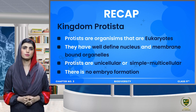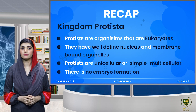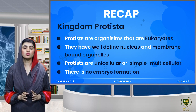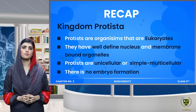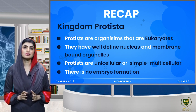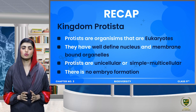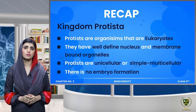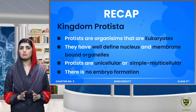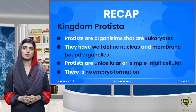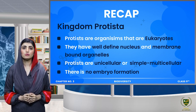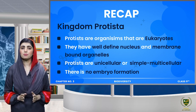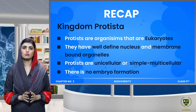Protists are eukaryotic — they are eukaryotes. Eukaryotes are organisms made of eukaryotic cells, meaning cells that have a well-defined nucleus and membrane-bounded organelles. Protists are unicellular or simple multicellular.